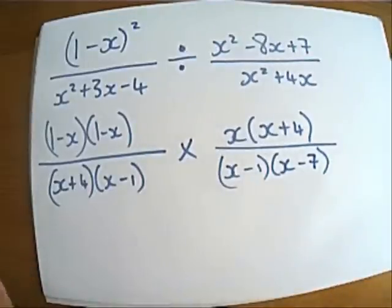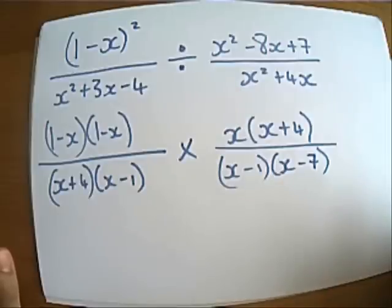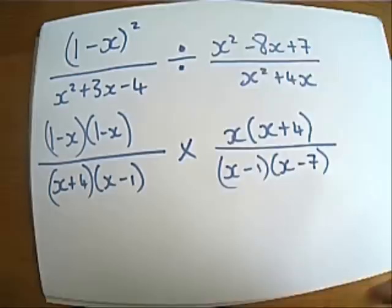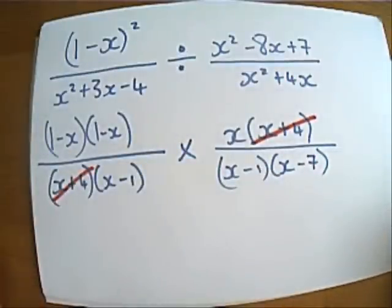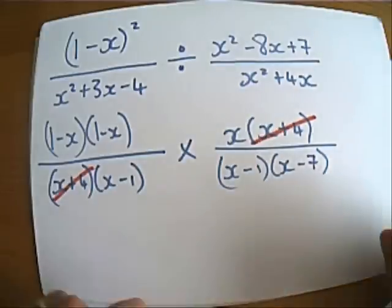Now the question is, can we tidy it up at all? Let's take a look. We've got on the top here an x plus 4, and on the bottom here an x plus 4. So let's cancel those things out. Is there anything else that we can cancel out? Let's have a look. My brain is now slowly melting. So I'm going to pause the video and have a little think.